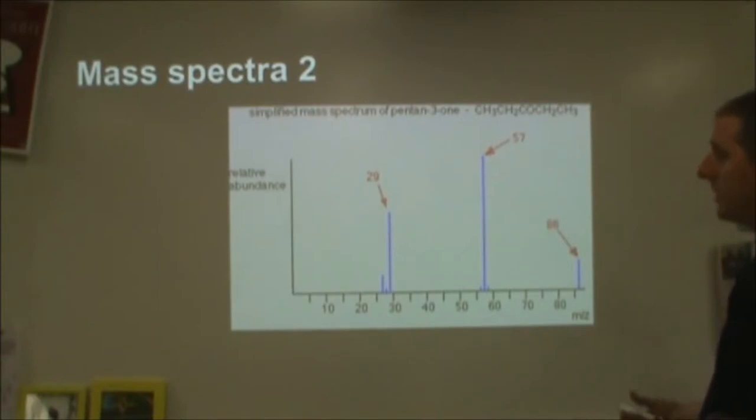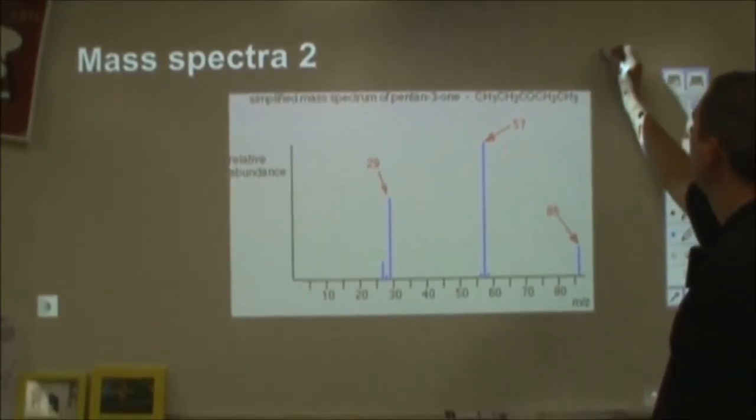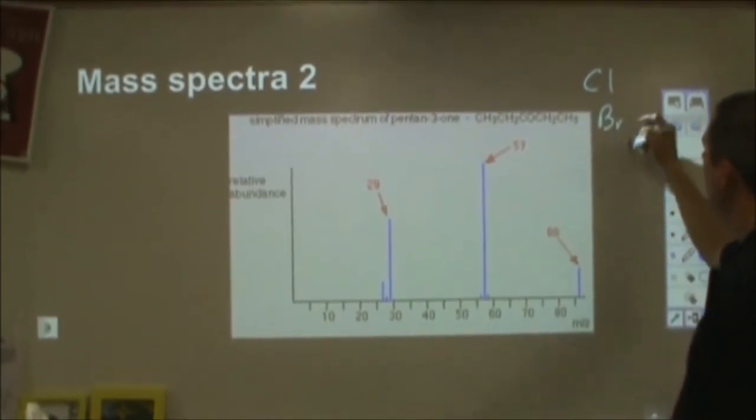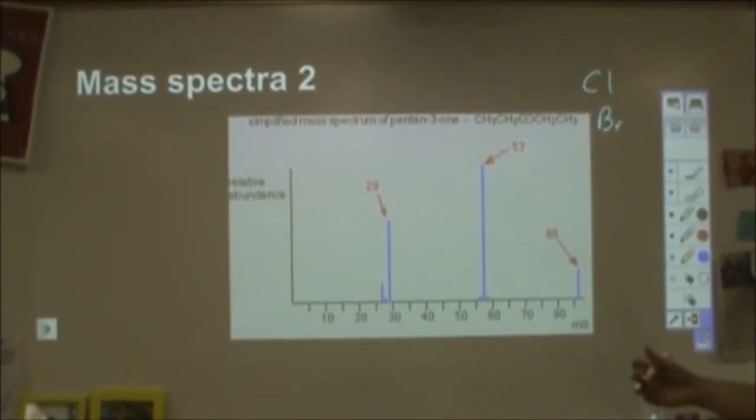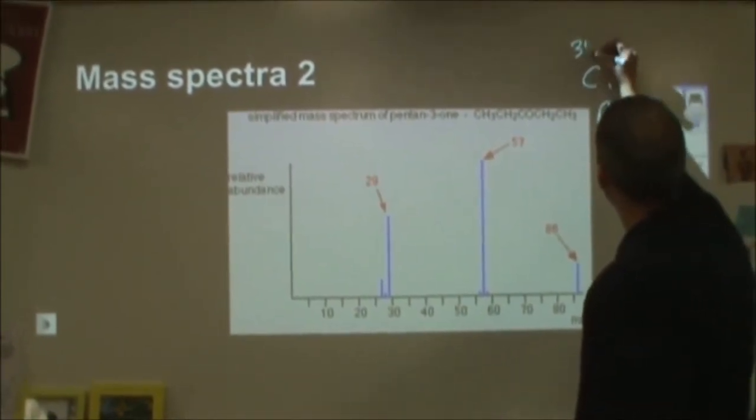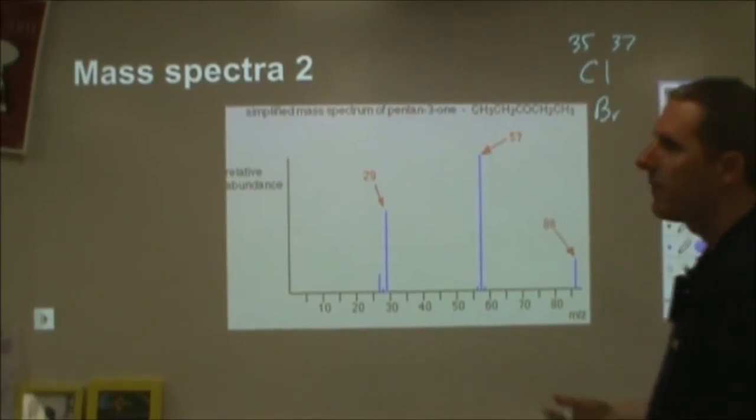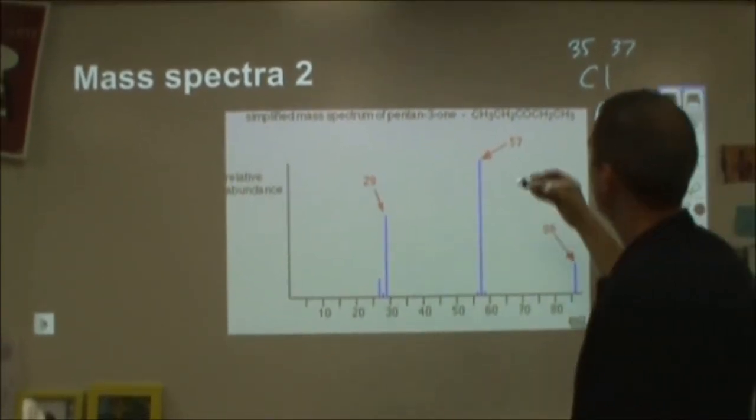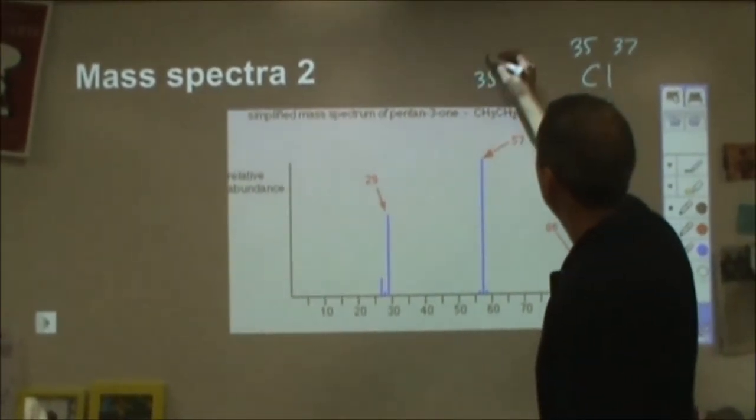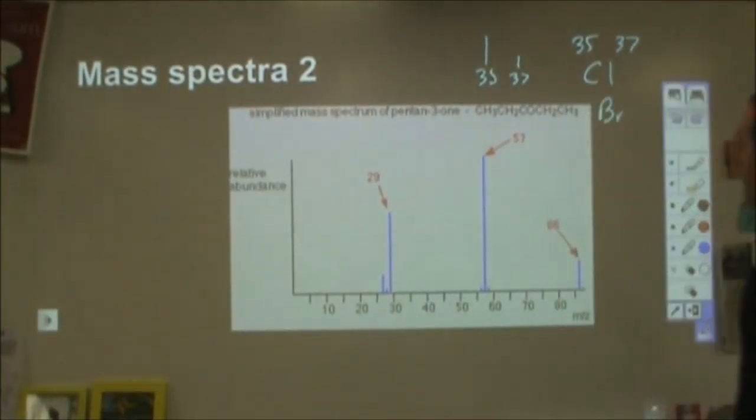So if you have an alcohol or a hydroxyl group, then maybe you'll see a peak at 17. If you have a lot of methyl groups, you might see a peak at 15. And one of the things that's really nice to look for are things like chlorine and bromine, because these have an isotopic abundance that actually is very clear from mass spectra. Chlorine has two isotopes, isotope 35 and 37, and the 35 occurs about 75% of the time.